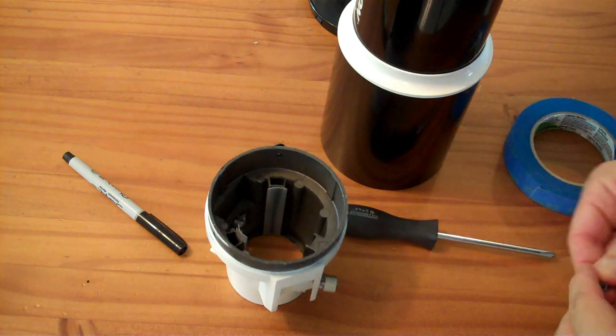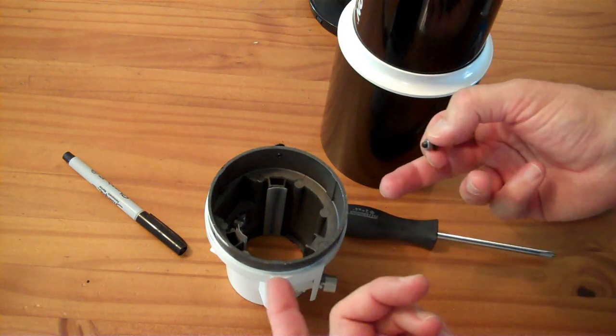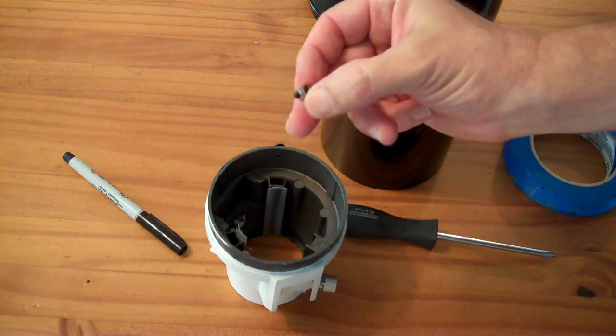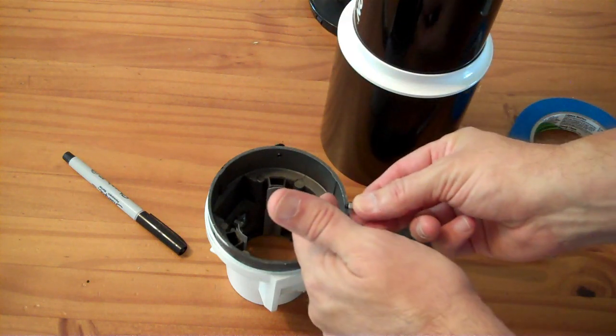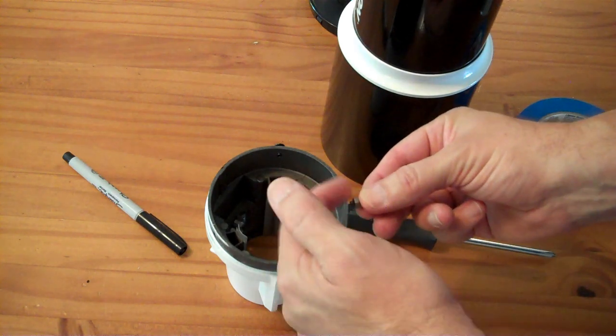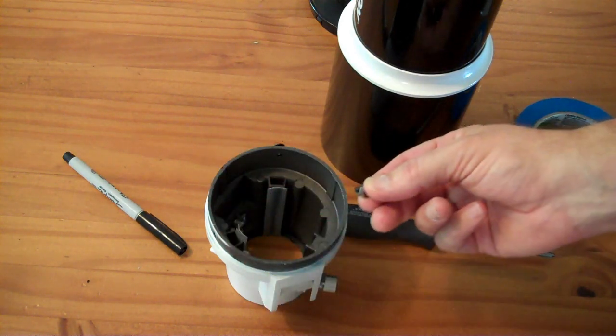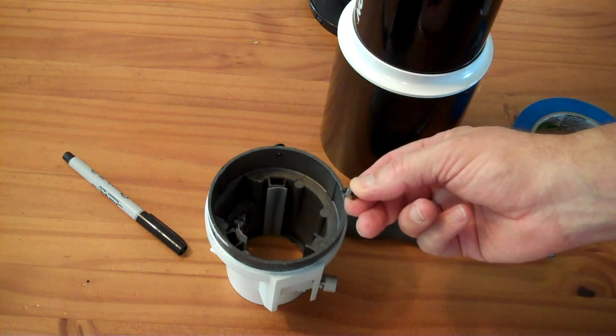Now, if you didn't have an M4 tap, you could theoretically just drill three holes that are big enough for an M4 screw, take some M4 nuts, screw them in, and use some JB weld to JB weld the nuts to the inside here. But luckily, I have an M4 tap.